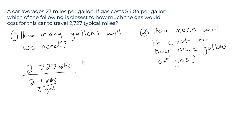One is kind of implied here, so I'll get rid of the one. Well, what's 2,727 divided by 27? It's 101. So we need to buy 101 gallons of gas for this trip.